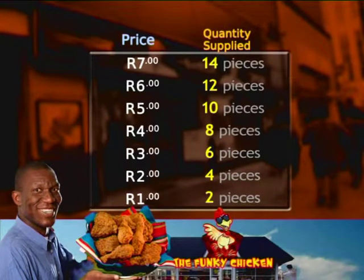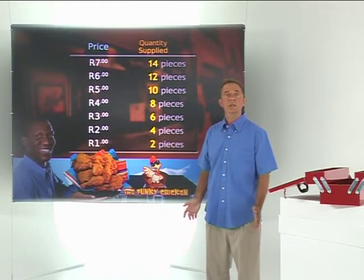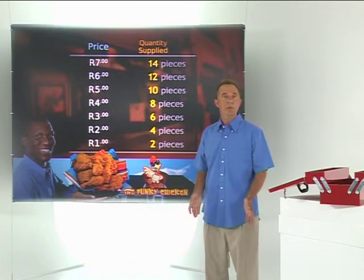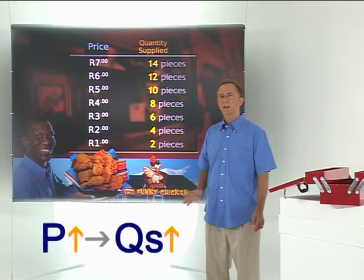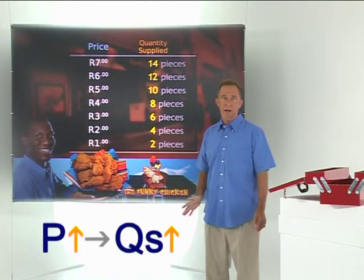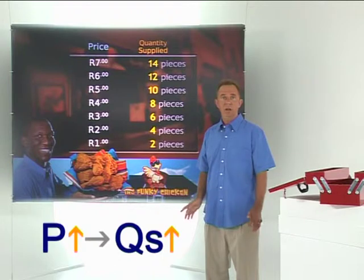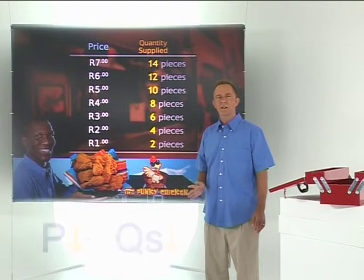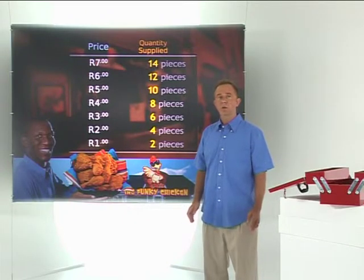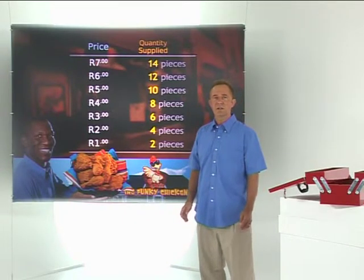This clearly confirms that a positive relationship exists between the price and the quantity supplied. In other words, the higher the price, the higher the quantity supplied, and the lower the price, the lower the quantity supplied. You'll see later that this relationship is governed by the law of diminishing returns.